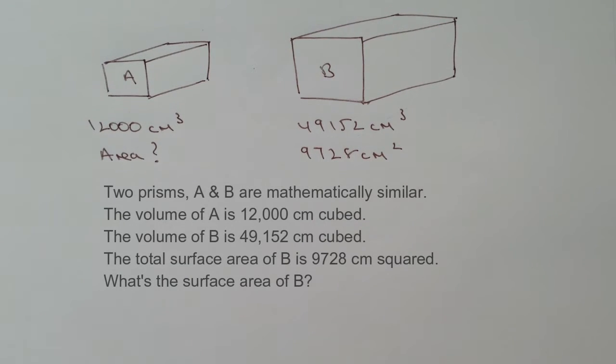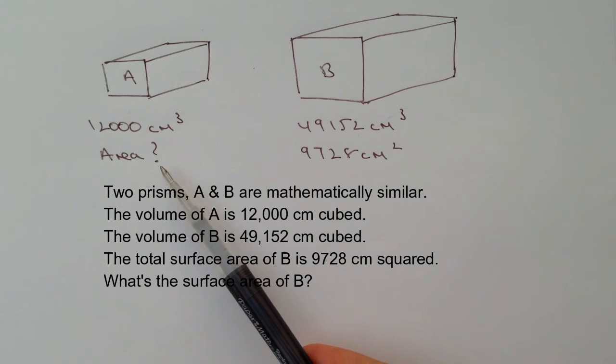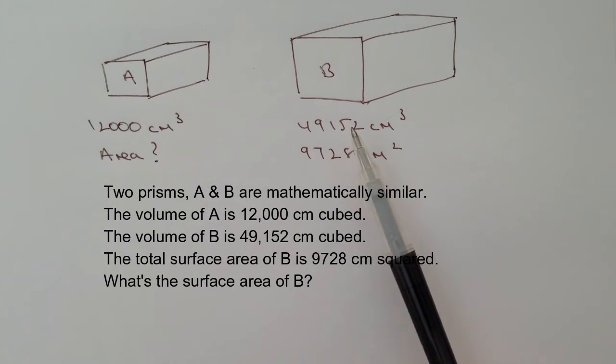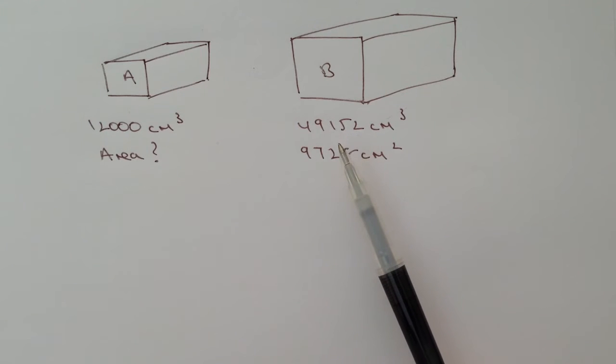Hi, in this video we're asked to work out the surface area of one of the mathematical shapes which is similar to the other. The information we're given is that shape A has a volume of 12,000 centimeters cubed, shape B has 49,152 centimeters cubed and a surface area of 9,728 centimeters squared, and we're asked to work out the surface area of shape A.